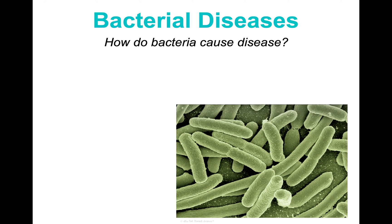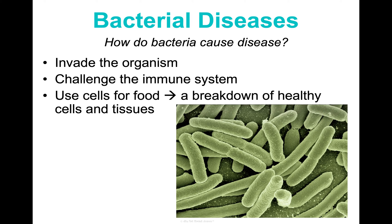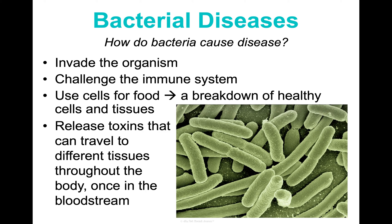Here's a picture of E. coli — E. coli does a lot of great things for us, but also causes illnesses such as food poisoning. For a bacterial disease, bacteria will invade an organism through your skin, your mouth, or wherever. They will then challenge and compromise your immune system, overcome it, and use your healthy cells for food, breaking down those healthy cells and the tissues those cells make up. They can then release toxins like proteins that travel through different tissues throughout your body once they make it into your bloodstream, which is how they can affect your whole body and make you very, very sick.